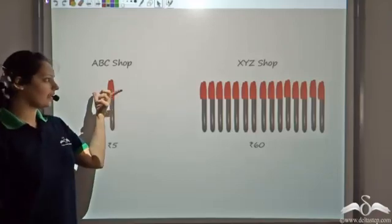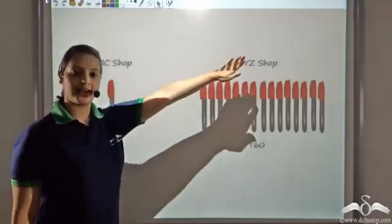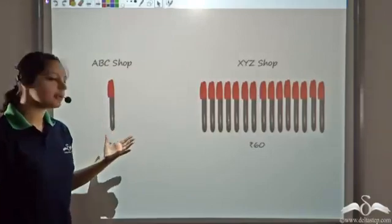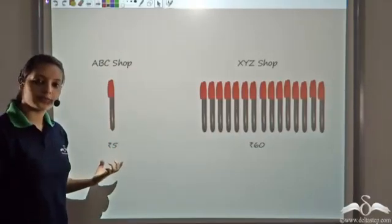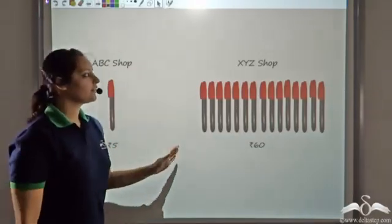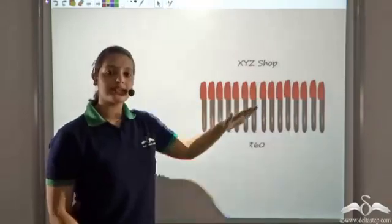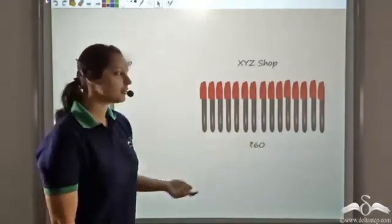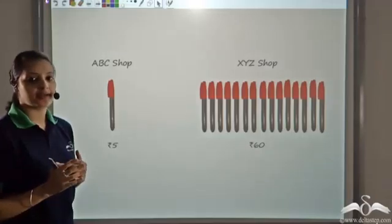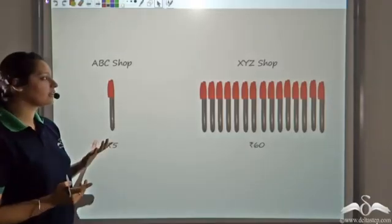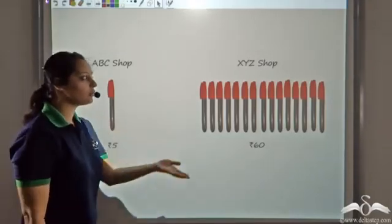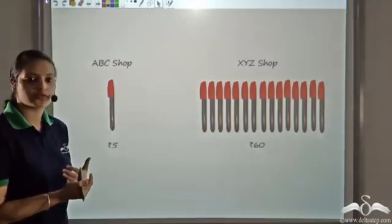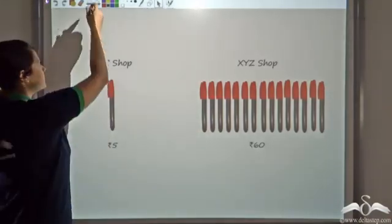There are two shops, ABC and XYZ. The price of a pen in shop ABC is 5 rupees, whereas XYZ shop sells 15 pens for just 60 rupees. Now you have to buy 8 pens. Where will you go — ABC shop or XYZ shop? Which would be the cheaper option for you? Let's look.